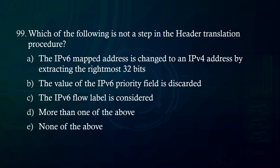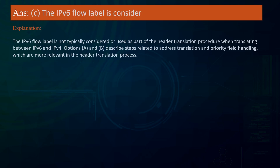Which of the following is not a step in the header translation procedure? A. The IPv6 mapped address is changed to an IPv4 address by extracting the rightmost 32 bits. B. The value of the IPv6 priority field is discarded. C. The IPv6 flow label is considered. D. More than one of the above. E. None of the above. Answer: The IPv6 flow label is considered. The IPv6 flow label is not typically used in header translation between IPv6 and IPv4. Options A and B describe steps related to address translation and priority field handling.